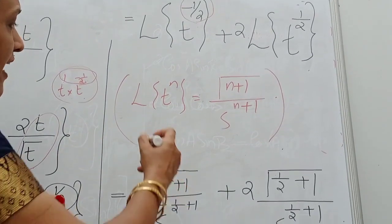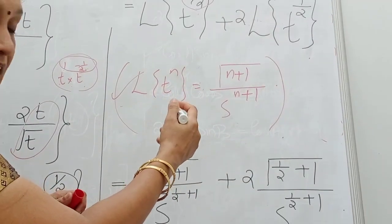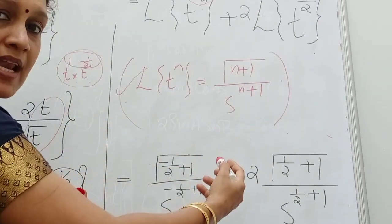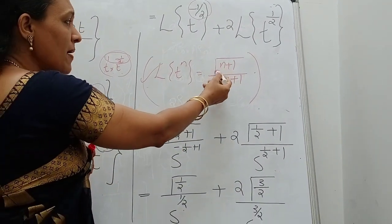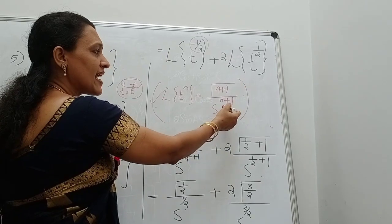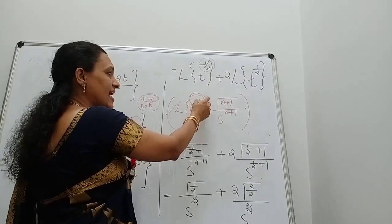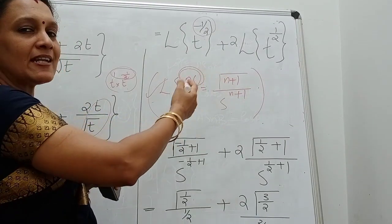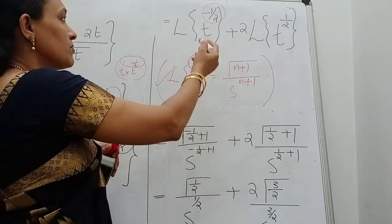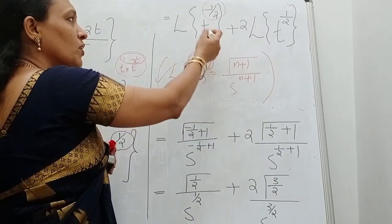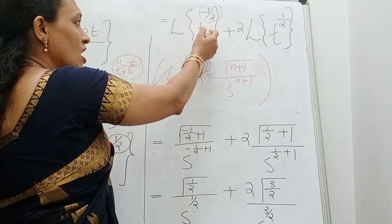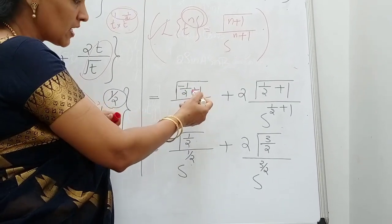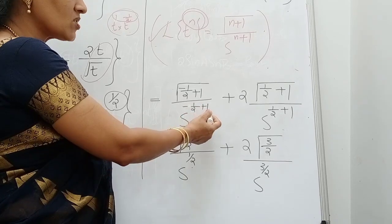In that case, use the gamma function formula: L of T raised to N equals gamma of N plus 1 divided by S raised to N plus 1, applicable when N is any positive number. For natural number N, you can use the factorial definition. Now substitute N equals minus 1 by 2: the first term L of T raised to minus half equals gamma of minus 1 by 2 plus 1 divided by S raised to minus 1 by 2 plus 1, plus 2 into gamma of 1 by 2 plus 1 divided by S raised to 1 by 2 plus 1.